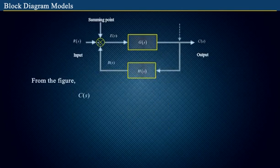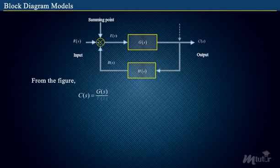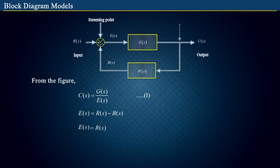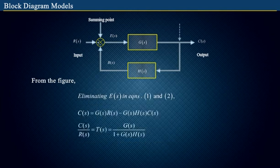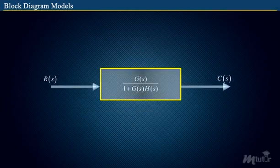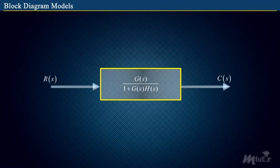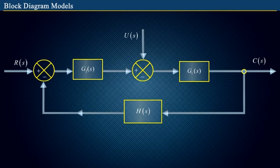From the block diagram, C of s is equal to G of s by E of s. This is equation 1. On simplification, E of s is equal to R of s minus H of s into C of s. That is equation 2. Eliminating E of s from equations 1 and 2, we get the equation as shown. Hence the given system is reduced and the closed-loop transfer function of the system is given as shown. Now let us move on to multiple input multiple output systems as shown.